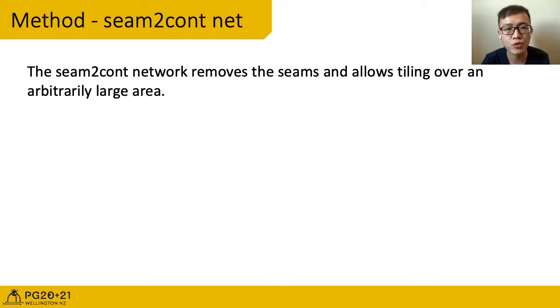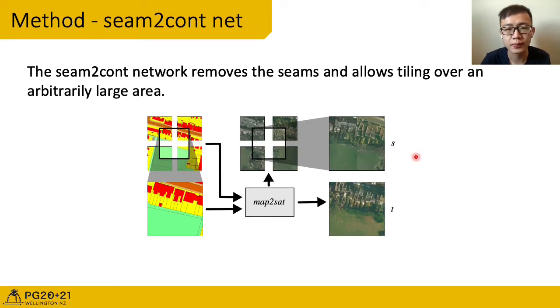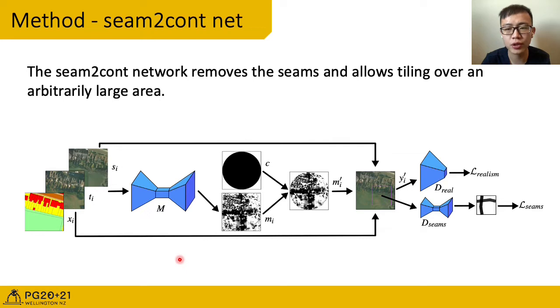The seam2cont network removes the seams and allows tiling over an arbitrarily large area. We obtain one image with seams and one without seams from map2sat network run over map data. We want to combine the outer part of s and inner part of t to one image without seams by image blending. To do so, we use a generator to create the blending mask. For the area of one tile i, we use map data xi, satellite image generated without seam ti, and satellite image with seam si as input. The generator m will generate a mask mi. We use a fixed circle mask as constraint to get the final mask mi prime. And we use this mask to blend ti and si into our final output results, yi prime.